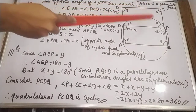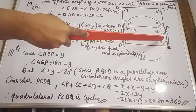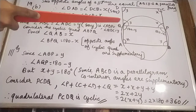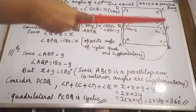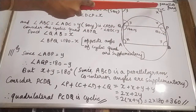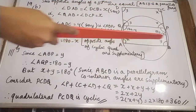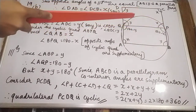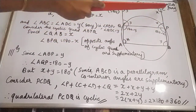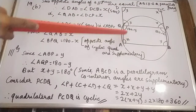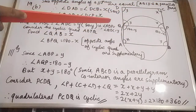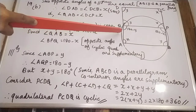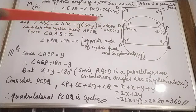Opposite angles are equal, so let angle ABC equal angle ADC equal Y. Instead of ABC we write ABP, and instead of ADC we write QDC. So angle ABP equals angle QDC, which equals Y.